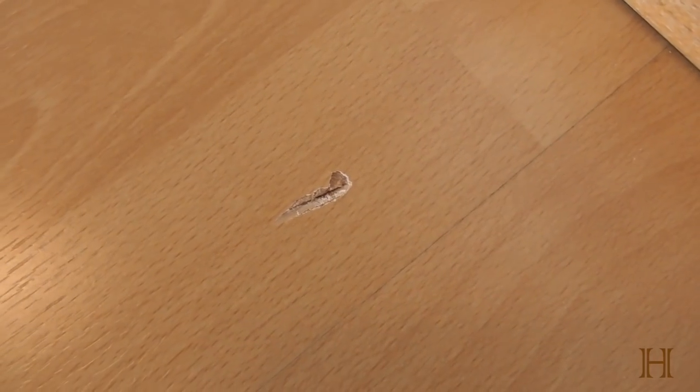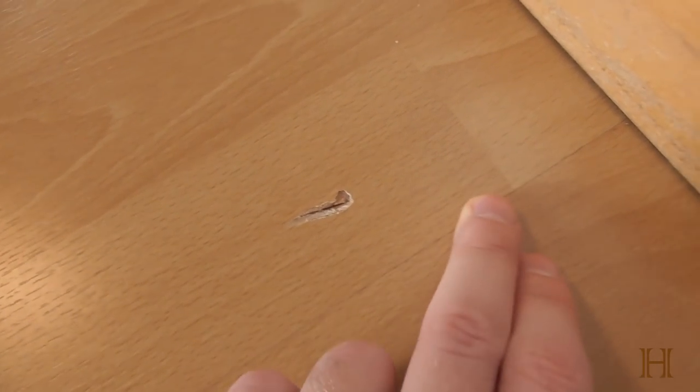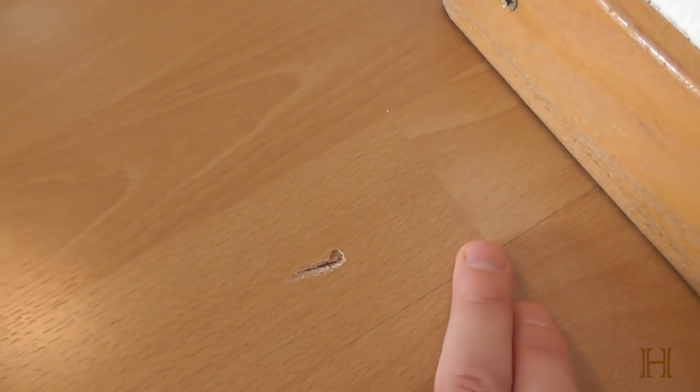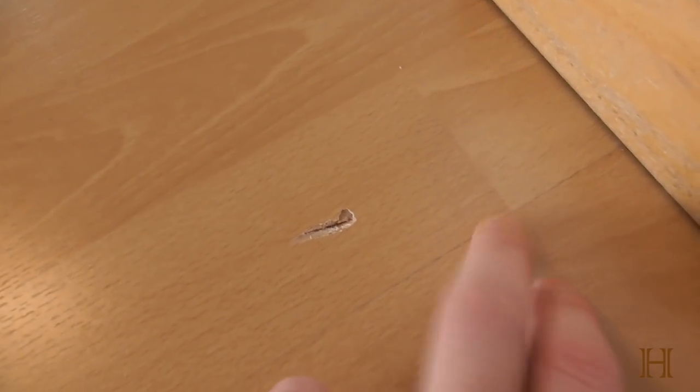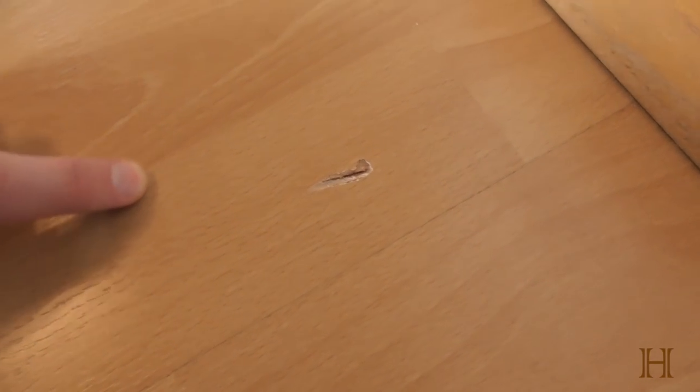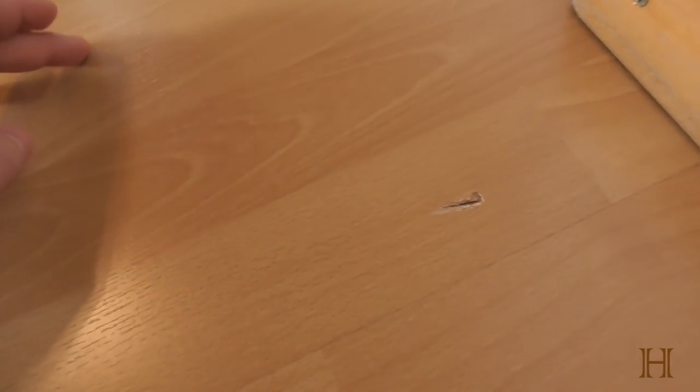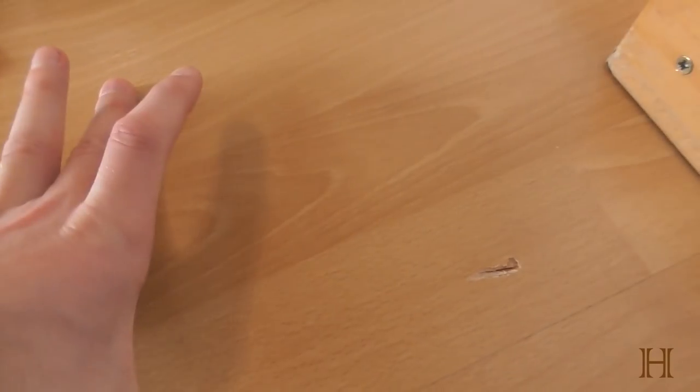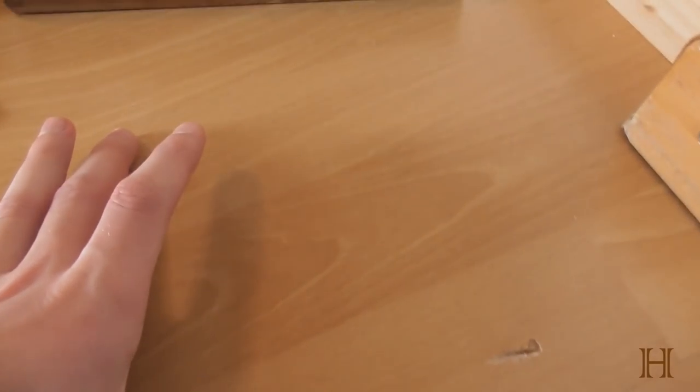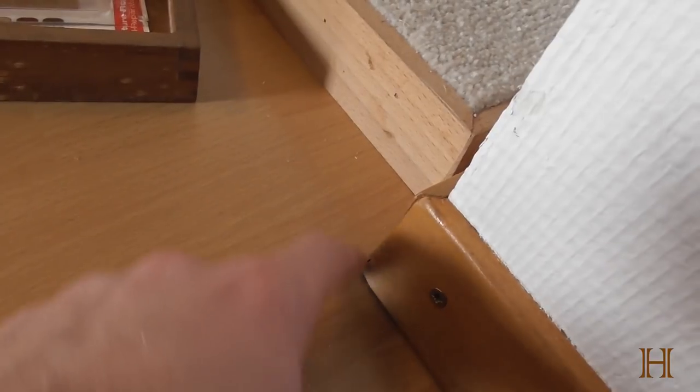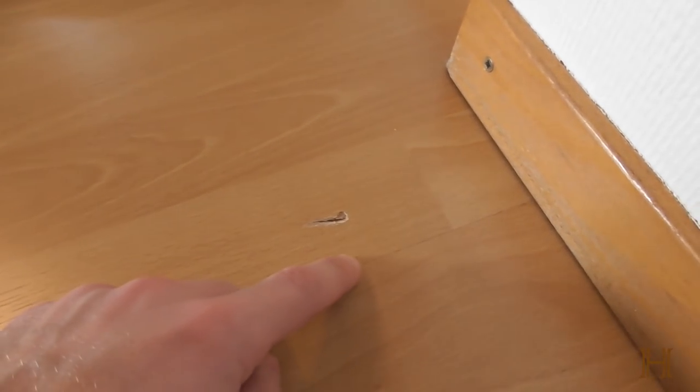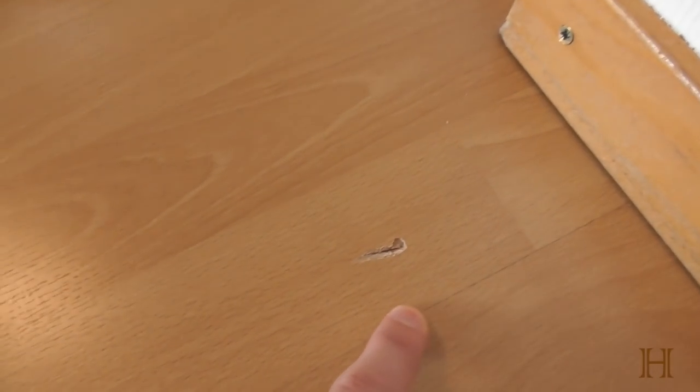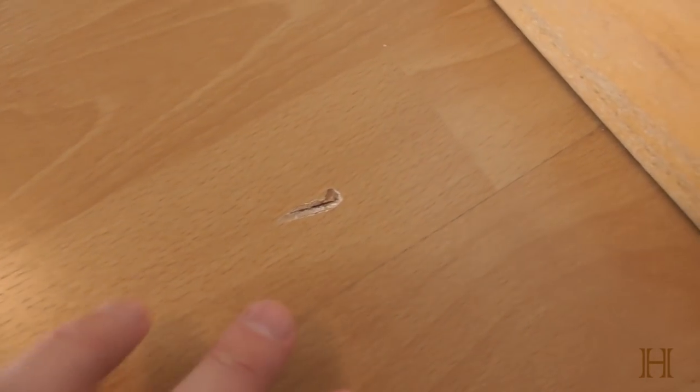Since it is laminate, you can't just cut in a Dutchman, which would be nice if this were real hardwood floor where you could just cut out a piece and put a new one. You would have to cut out basically the whole panel of this laminate flooring, but the panel goes around the corner and all the way over to here.